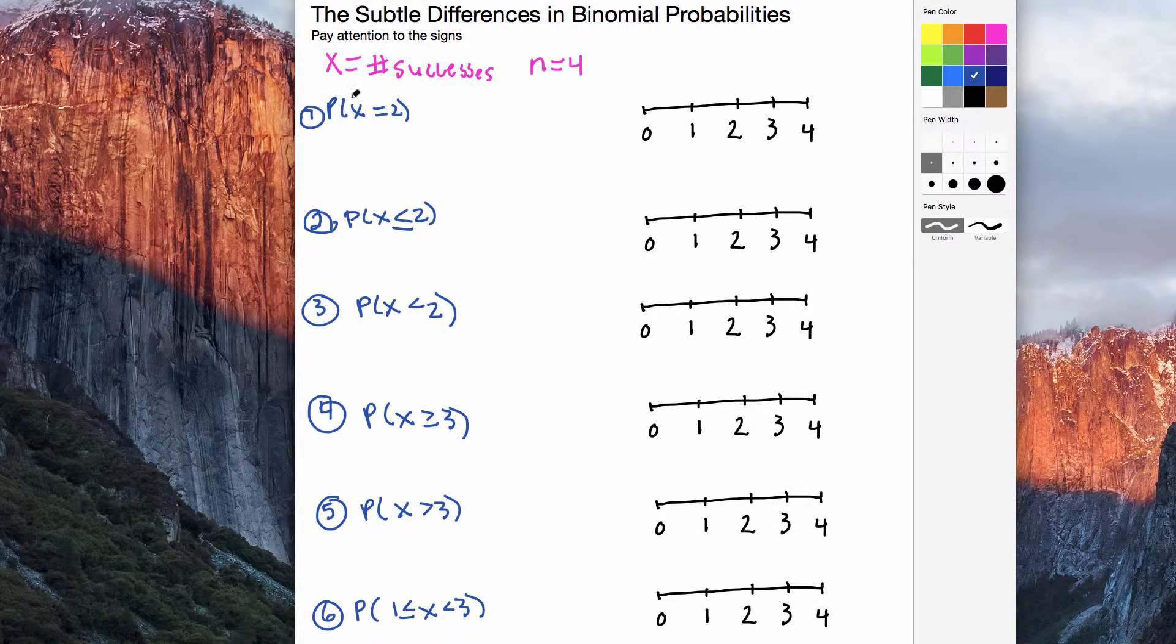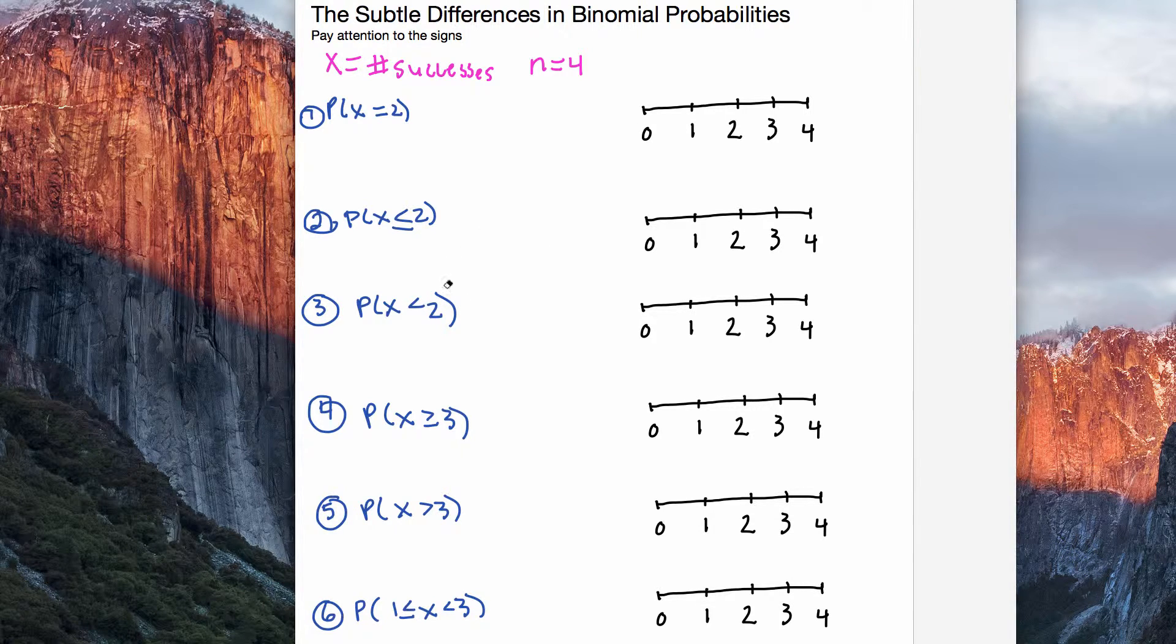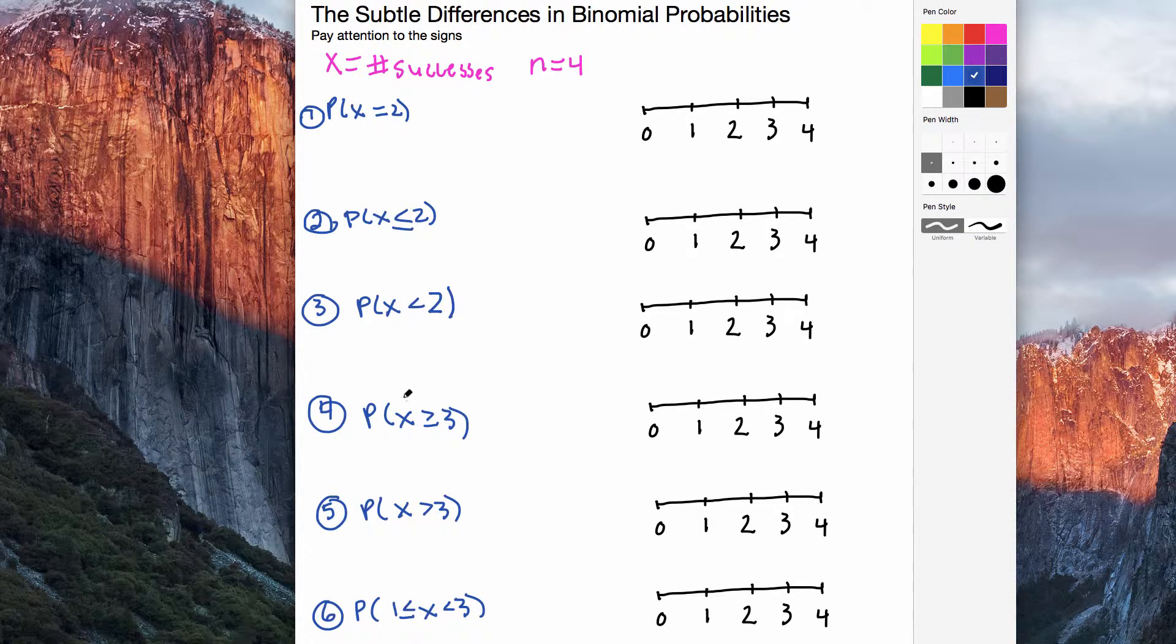We have: what's the probability that the number of successes is exactly equal to 2? The second one is less than or equal to 2. The third one is less than 2. Fourth one, greater than or equal to 3, greater than 3. And then here we are between 1 and 3, where 1 is included and 3 is excluded.